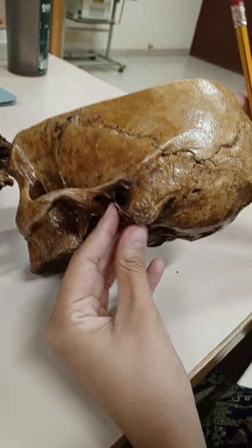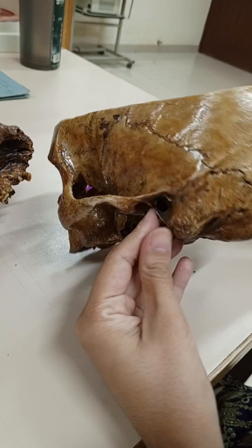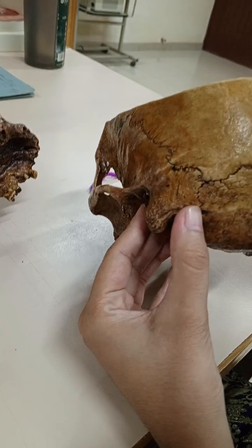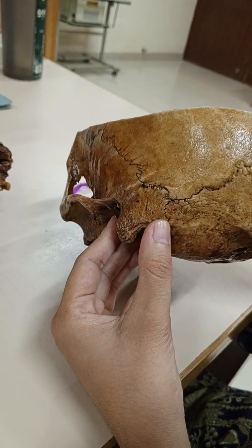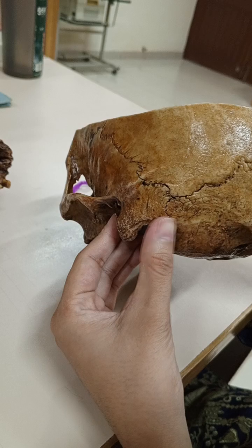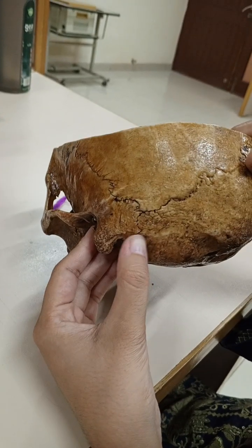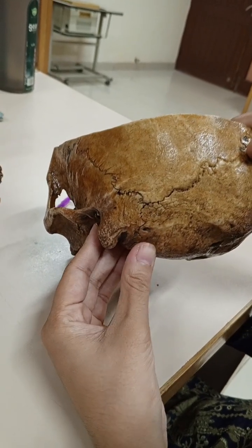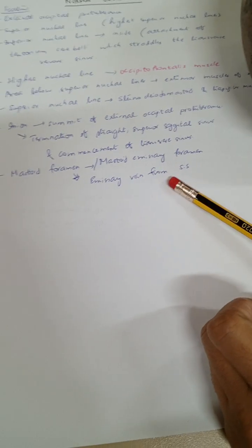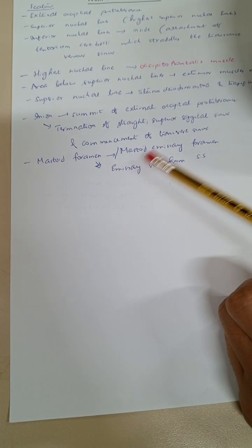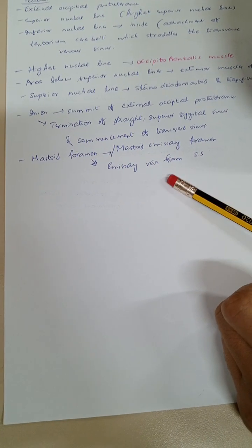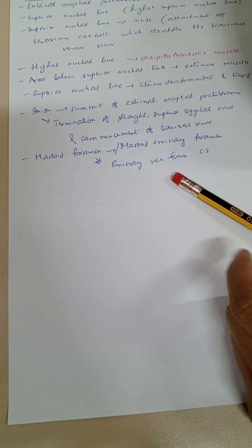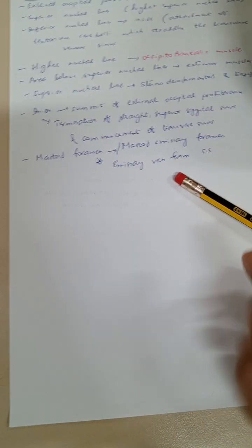This is the mastoid process, and this is the mastoid foramen. Here you can see the mastoid foramen from which the emissary vein passes. From the mastoid foramen, the mastoid emissary vein passes and the mastoid artery also passes.